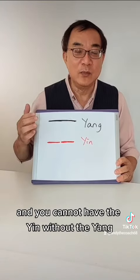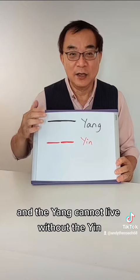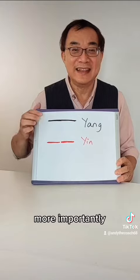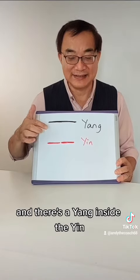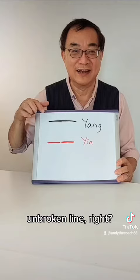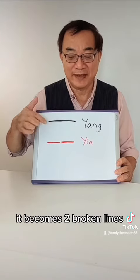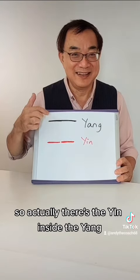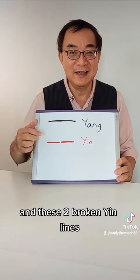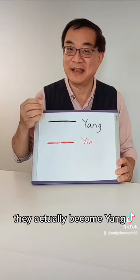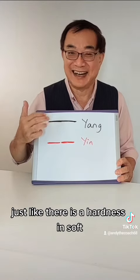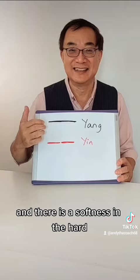You cannot have Yin without Yang, and Yang cannot live without Yin. More importantly, there is Yin inside the Yang, and there is Yang inside the Yin. This Yang line is one unbroken line — but if I break it into two, it becomes two broken lines. So there is Yin inside the Yang. And if I join the two Yin lines together, it actually becomes Yang. So you can see there is Yang inside the Yin — just like there is hardness in softness, and softness in hardness.